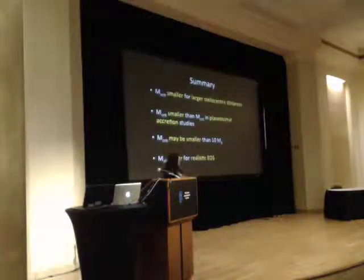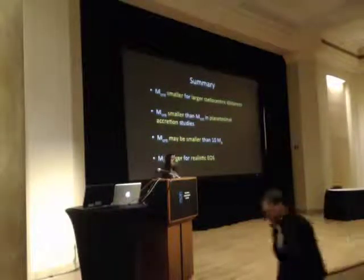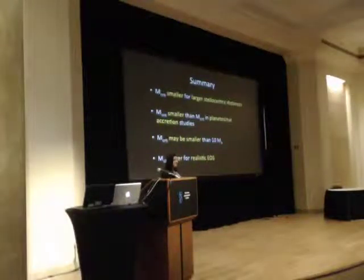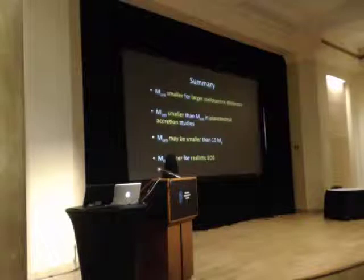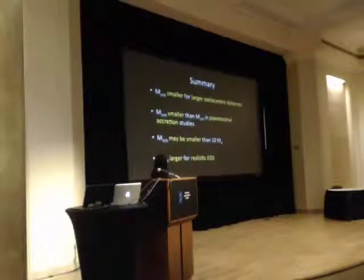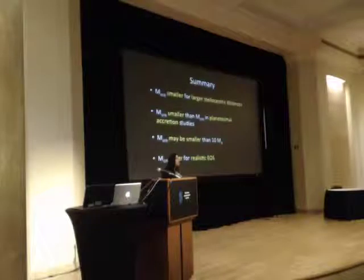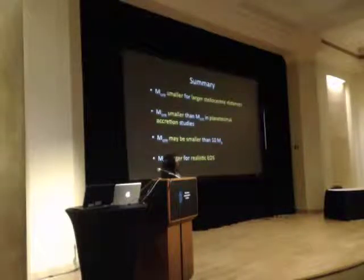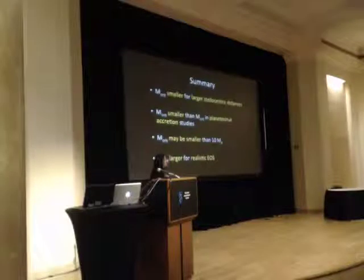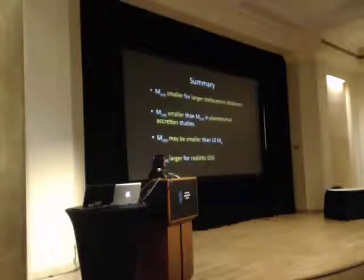A few takeaway points: we calculated the minimum core mass to form a giant planet during the lifetime of the protoplanetary disk, assuming a low planetesimal accretion regime where luminosity evolution is dominated by Kelvin-Helmholtz contraction. The critical core mass is smaller as we move further out in the protoplanetary disk, and it is smaller than similar studies that assume standard planetesimal accretion rates — representing an absolute minimum on the core mass needed. In some cases, the critical core mass may be smaller than 10 Earth masses. However, taking into account a realistic equation of state brings the critical core mass back up to a value close to 10 Earth masses, though it varies with location in the disk and depends strongly on opacity. Thank you.